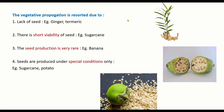Seeds produced by sugarcane have short viability — they last for a shorter period of time. When growing sugarcane by seeds, you must harvest and sow in the same season otherwise the seeds die. Sugarcane is perennial and flowers only once in four to five years. Seed production is very rare — for example in banana, seed production is seen only in some traditional diploid varieties, while in triploid varieties seeds are absent or degenerated.